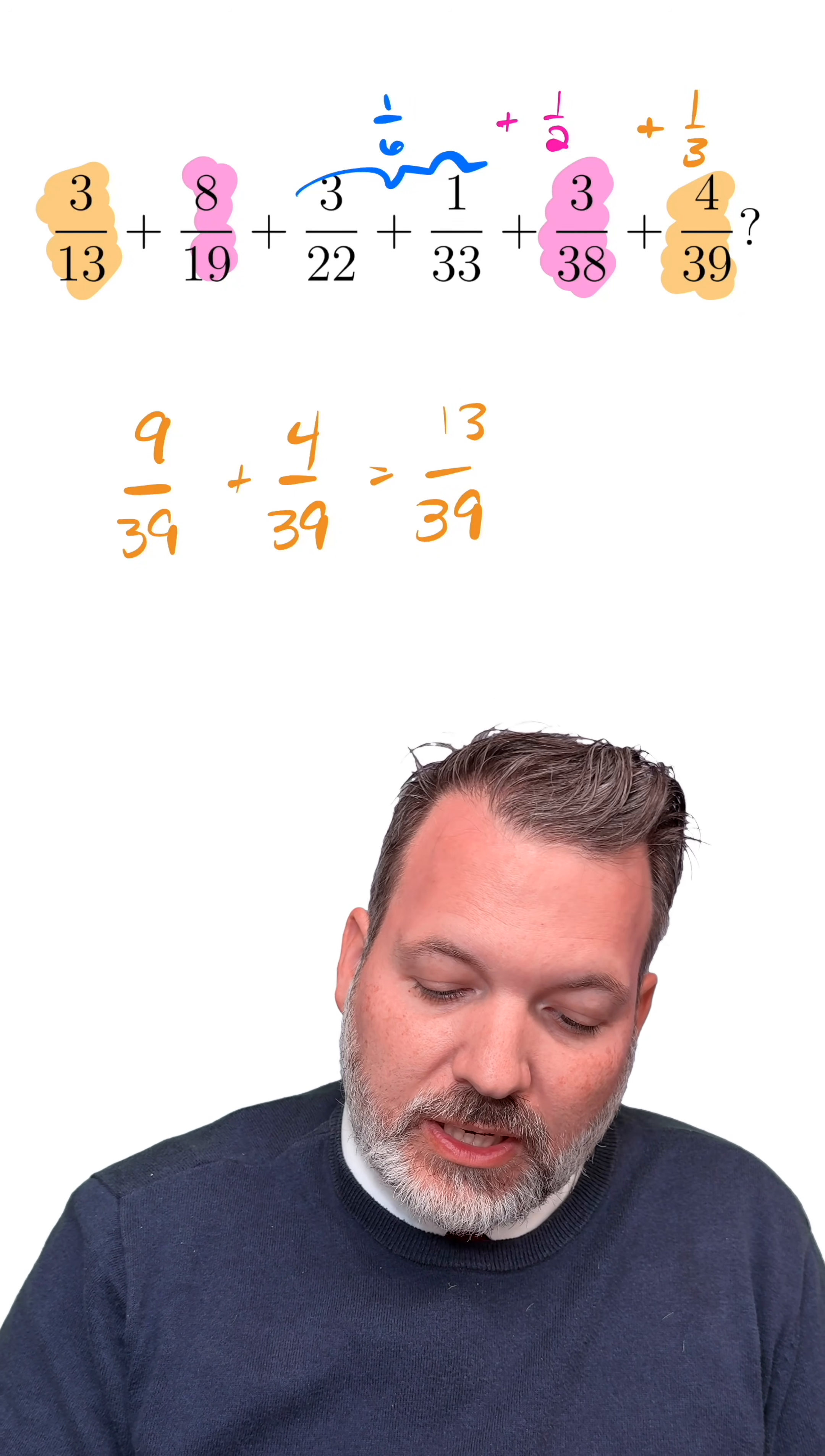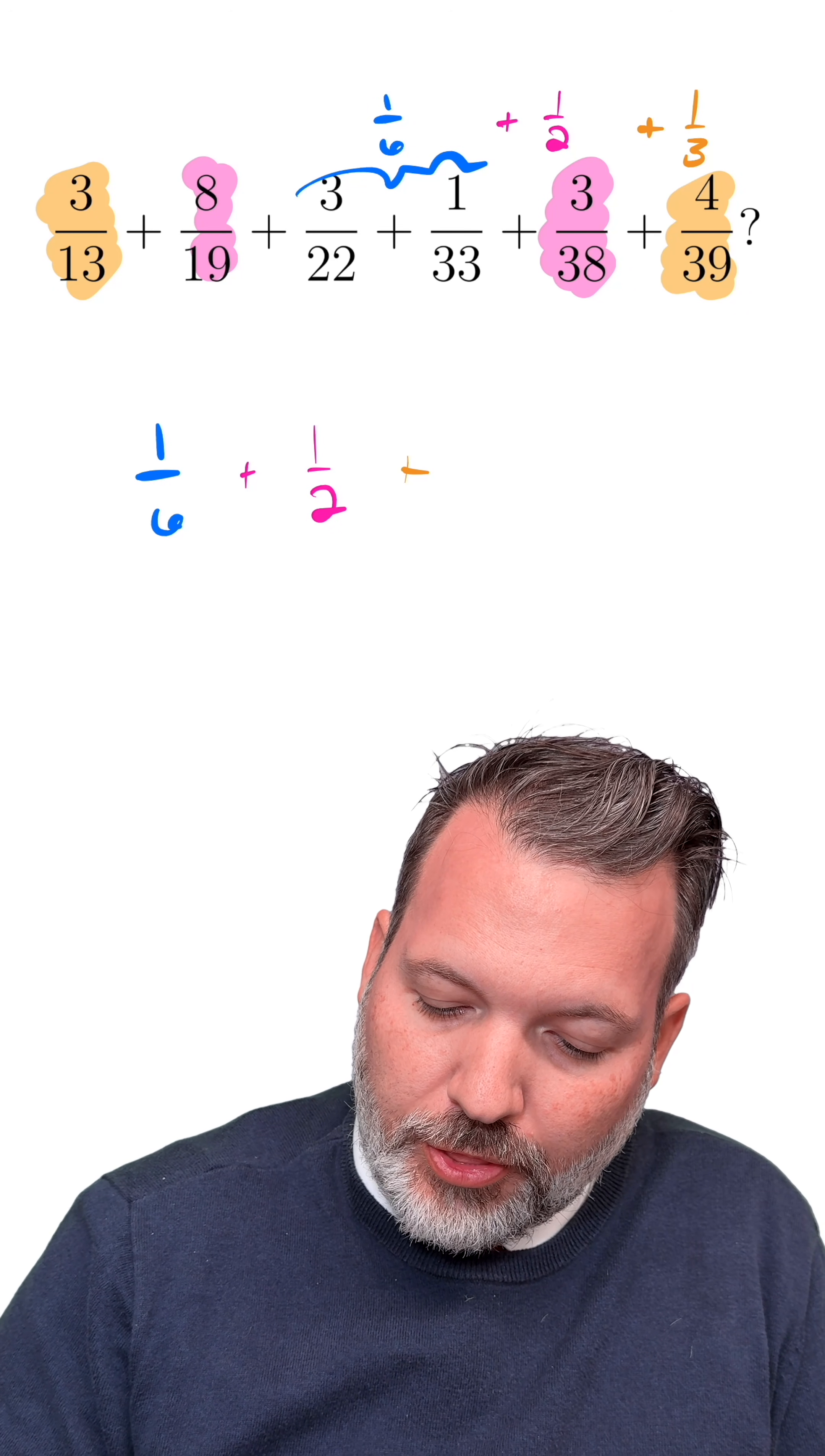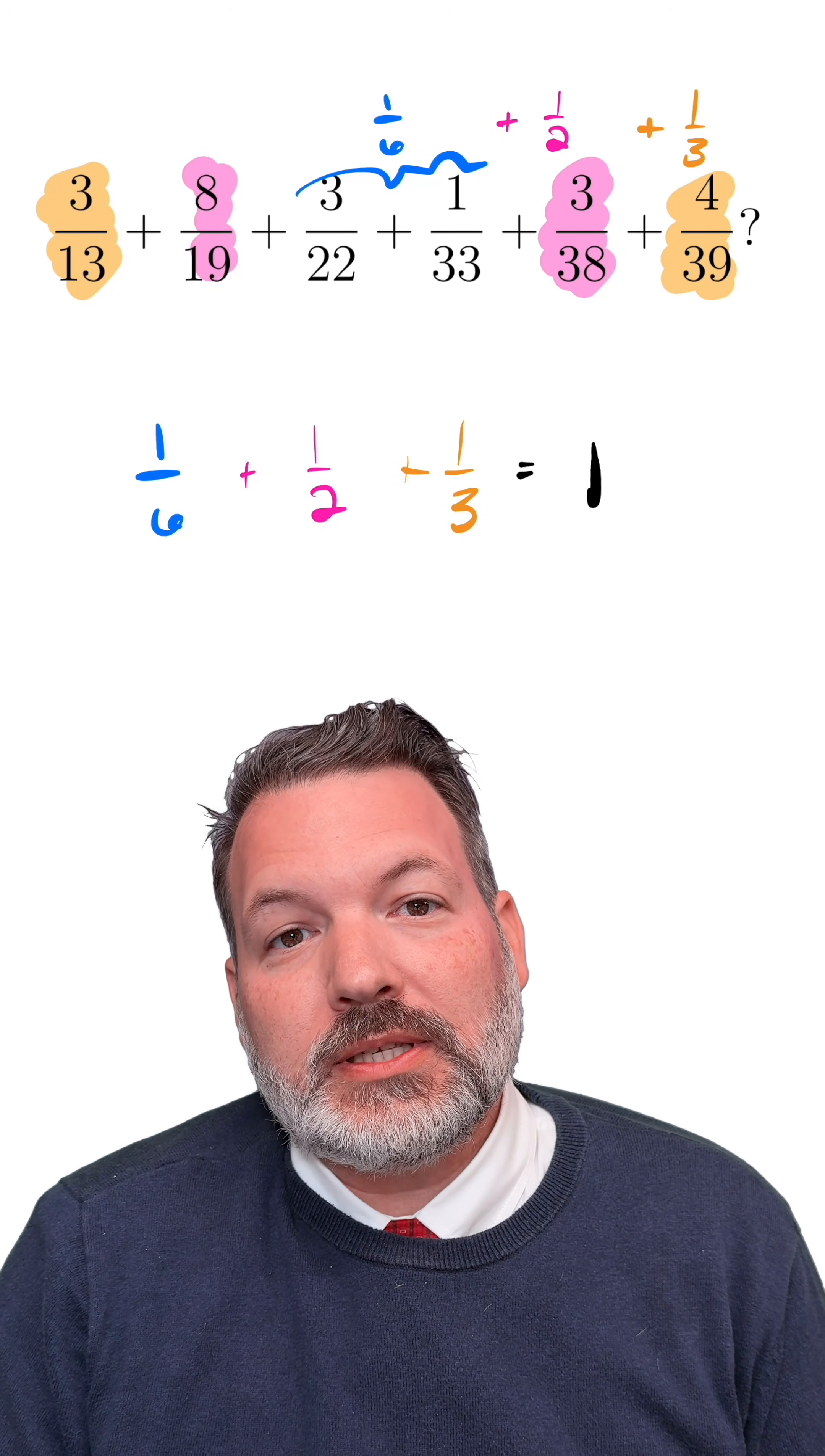That means all six fractions are taken care of, and all we're really adding together is 1/6 + 1/2 + 1/3. A third plus a sixth is a half, plus another half makes one. So in fact, all six of these not-so-nice-looking fractions add together to make one.